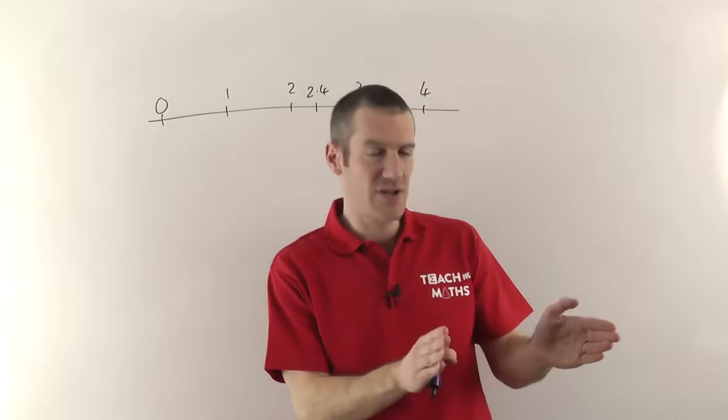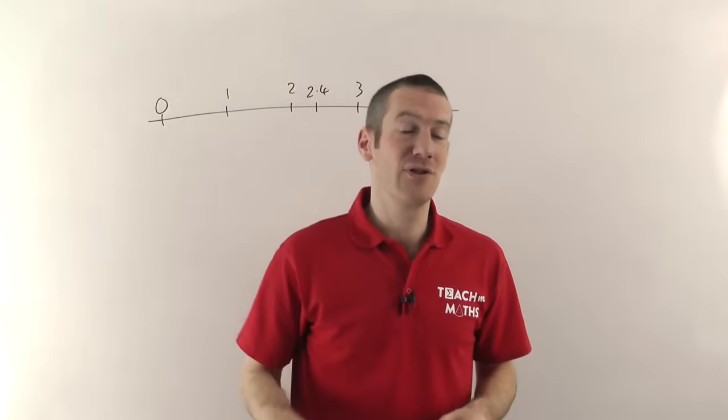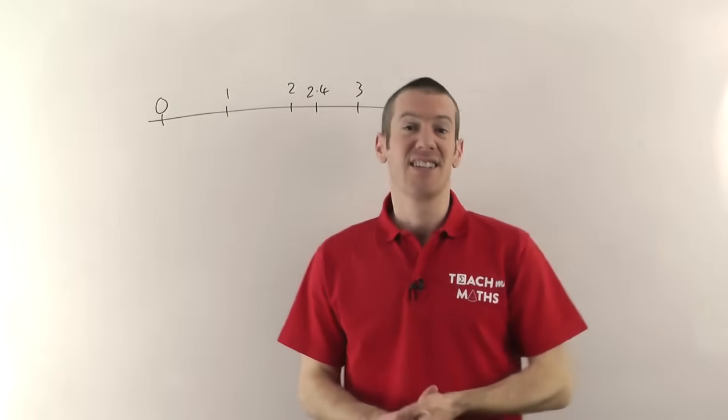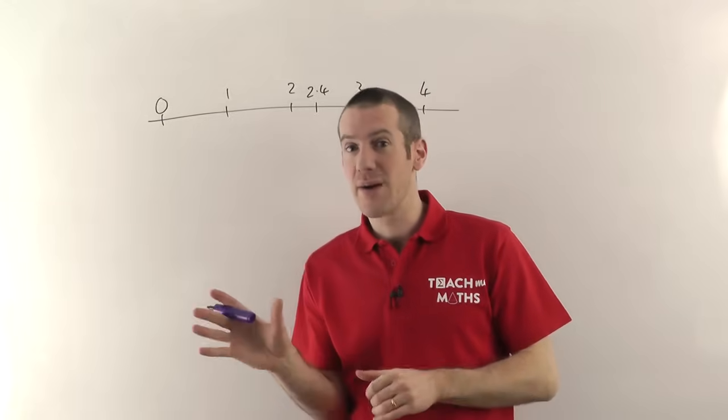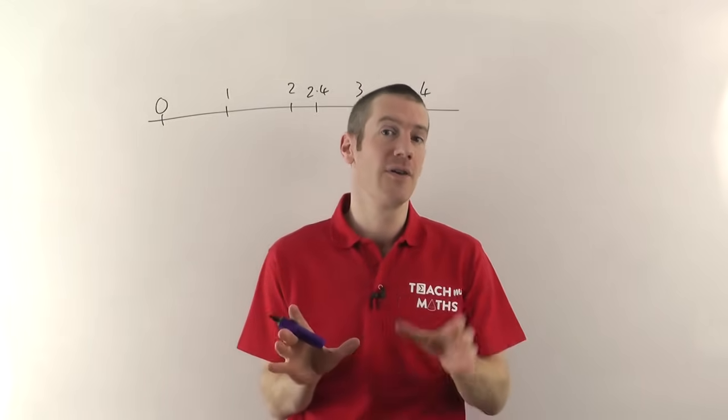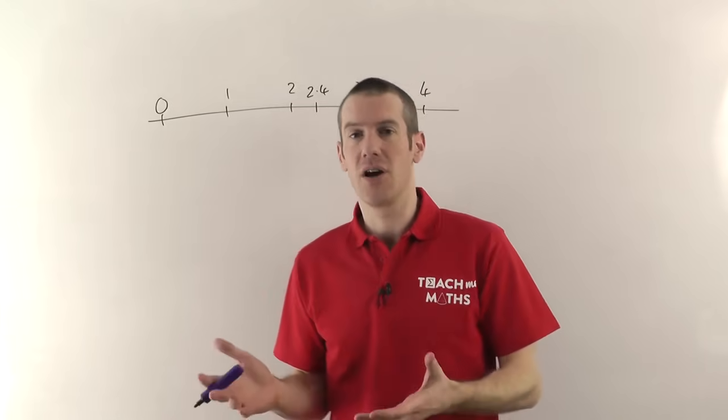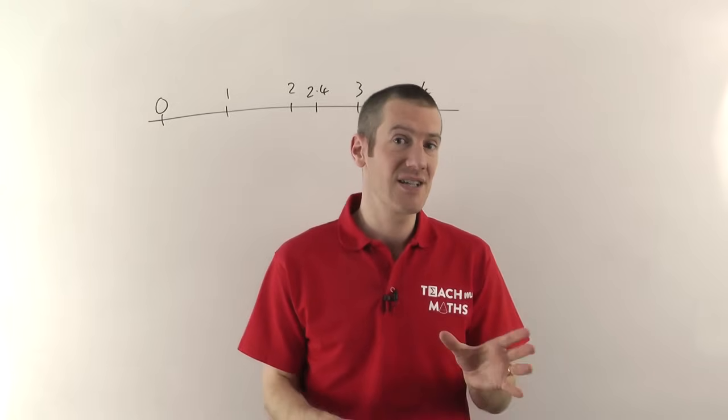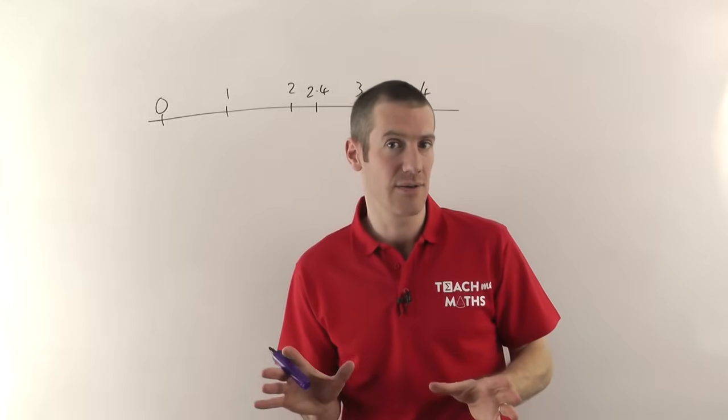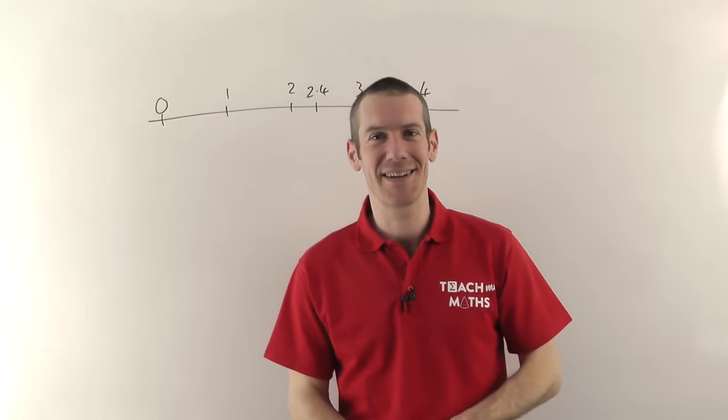So hopefully that's given you a good overview of the different kinds of data and some of the words we use. Essentially, data is primary or secondary depending on where you got it from, and then it's qualitative or quantitative. So qualitative if it's not a number, if it's a color or something like that. Quantitative if it is a number, and then it could be either discrete or continuous. That's how it breaks down. My name is Jonathan Hicks and you're watching Teach Me Maths.